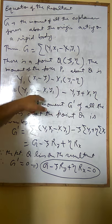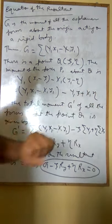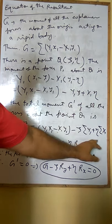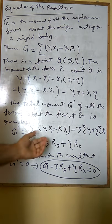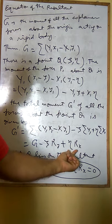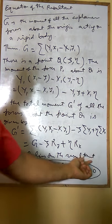Since ξ and η are constants, we have ξ·Σy₁ and η·Σx₁. This gives us our earlier G minus ξRy plus ηRx. Therefore, suppose point Q lies on the resultant.